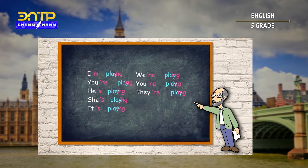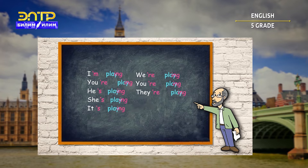As you can see, we can write abbreviations of verb to be. Instead of 'I am playing,' we can say 'I'm playing.' Instead of 'you are playing,' we can say 'you're playing.' Instead of 'he is playing,' we can use 'he's playing.' She's playing, it's playing, we're playing, you're playing, they're playing.